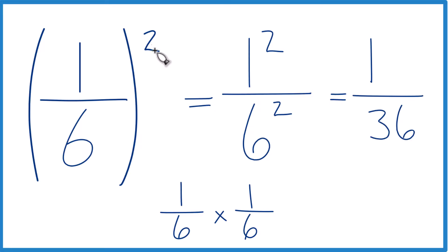So 1/6 squared equals the fraction 1/36. This is pretty small compared to 1/6, but that's because we're multiplying a fraction times a fraction. So we're going to get a smaller number.